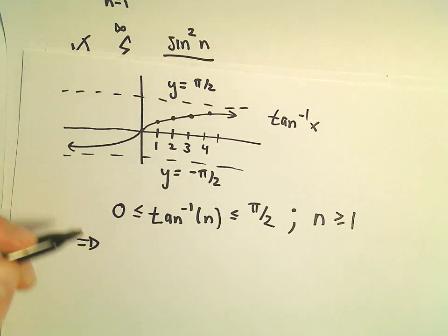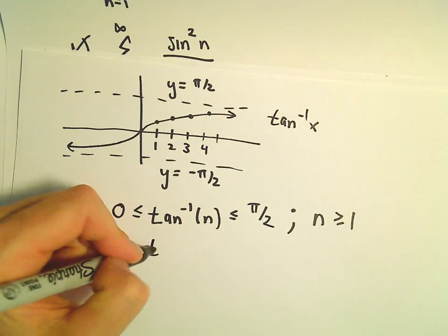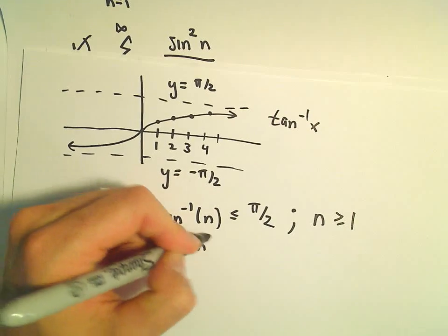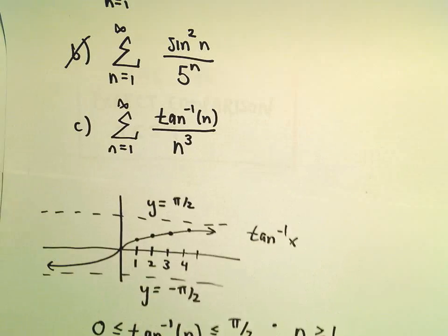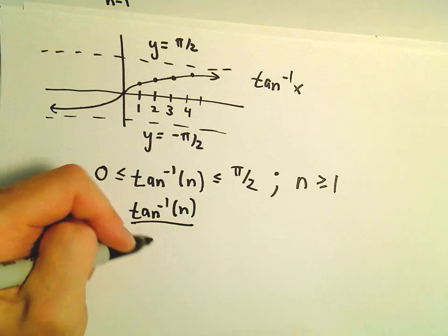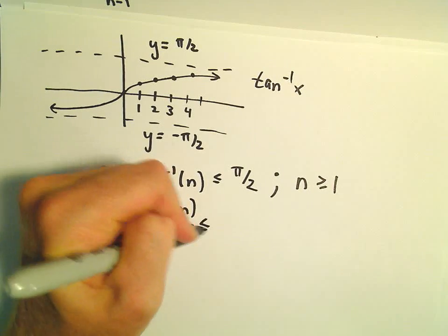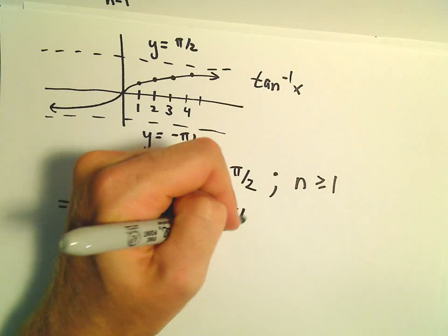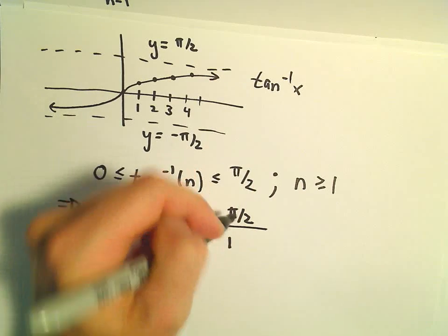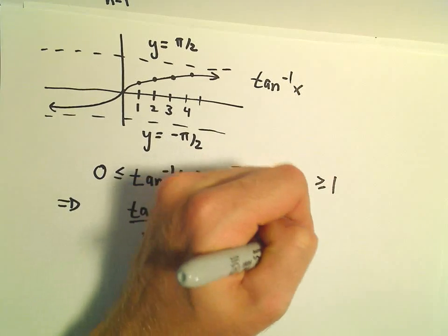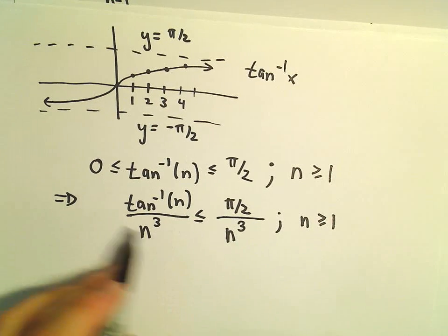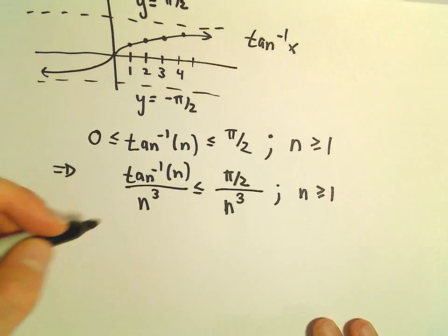Well, if this is true, we can simply say arctangent of n divided by n cubed is going to be less than or equal to π/2 divided by n cubed. And these are all positive, so I'm leaving out the zeros.